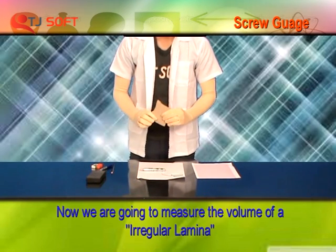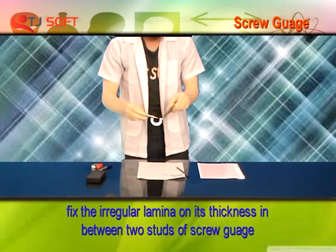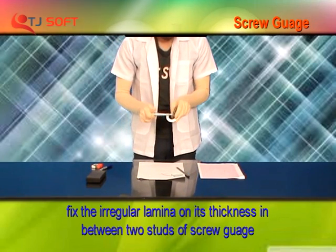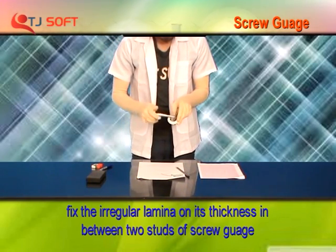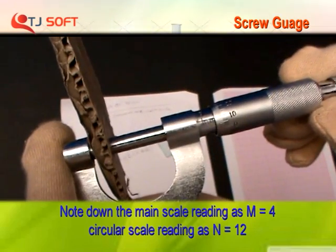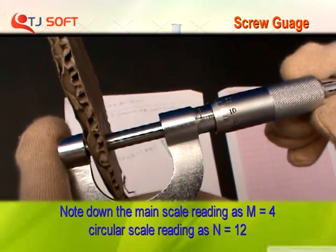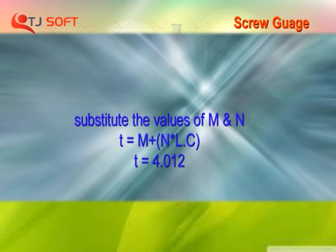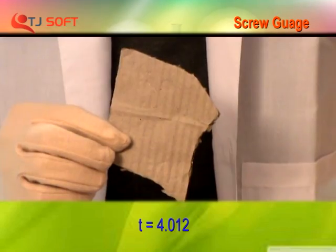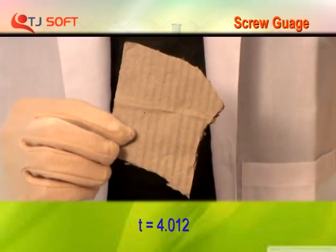Now we are going to measure the volume of irregular lamina. Fix the irregular lamina in between two studs of screw gauge. Take main scale reading M, circular scale reading and substitute the values of M and N. Then T is equal to M plus N into LC. We get the thickness of irregular lamina.